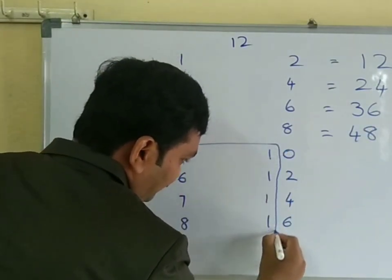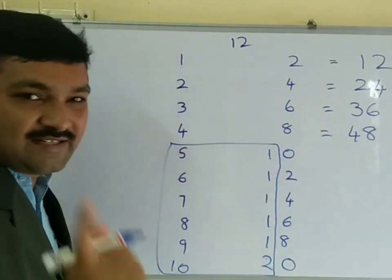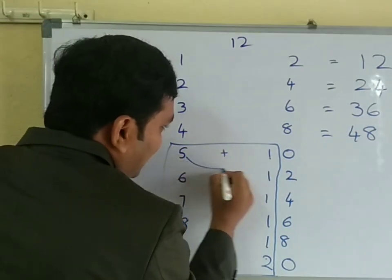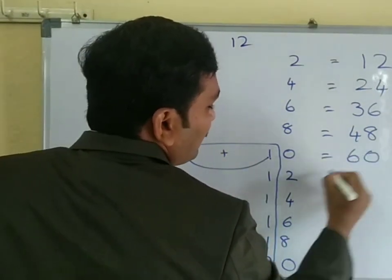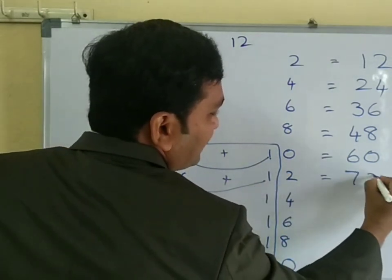Here, see the 2 digits are there now. In this side, 2 digits are there. When it will come as 5's, you want to add, means this 5 plus 1 is 6, 0. See, 6 plus 1, 7, 2.